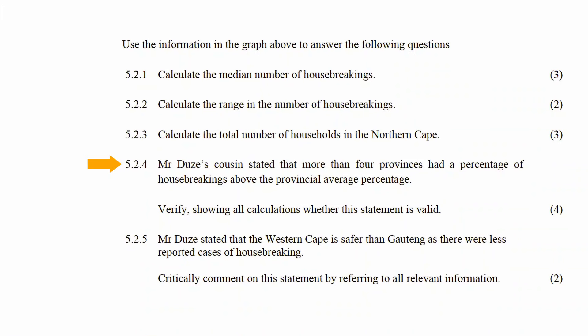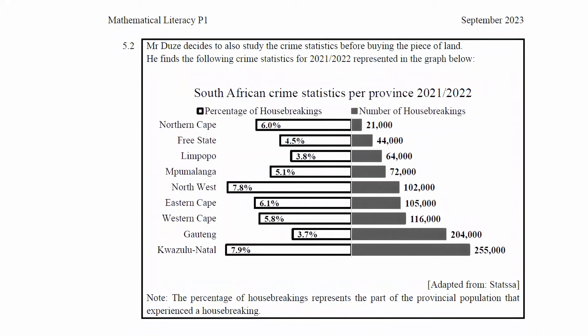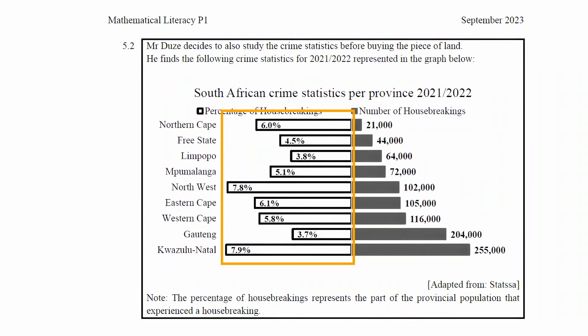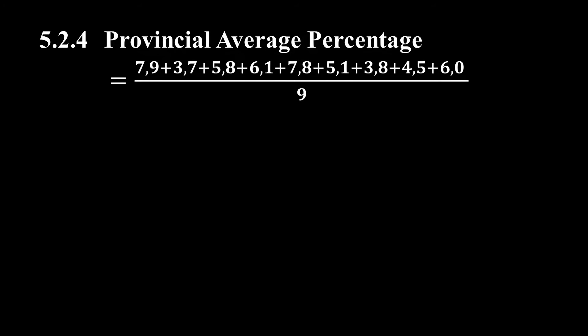In question 5.2.4, Mr. Doozie's Cousin stated that more than four provinces had a percentage of house break-ins above the provincial average percentage. You have to verify, showing all calculations, whether the statement is valid. The first step is to calculate the provincial average percentage. The average, also known as the mean, is a measure of central tendency. It is calculated by finding the sum of all values divided by the number of values — in this case, the sum of the percentages of all provinces divided by the number of provinces in South Africa. This gives us an average of 5.6%.